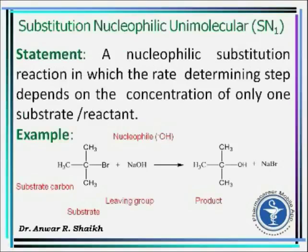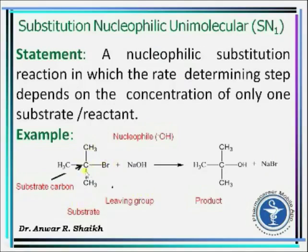A nucleophilic substitution reaction in which the rate determining step depends on the concentration of only one substrate reactant is known as a nucleophilic substitution unimolecular reaction — SN1. In the example, the whole molecule on which the reaction takes place is the substrate; the part going out is the leaving group; the carbon where substitution takes place is the substrate carbon; and the attacking species, OH⁻, is the nucleophile.